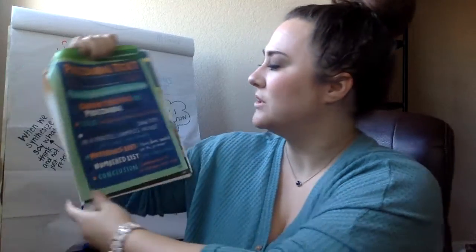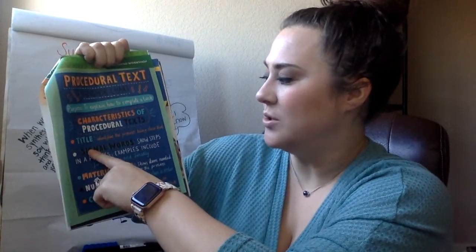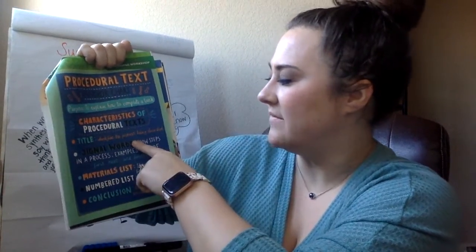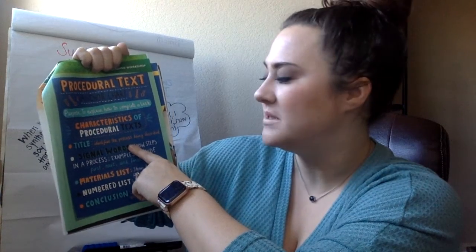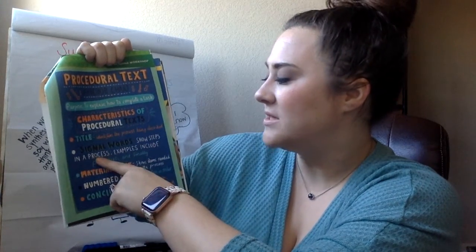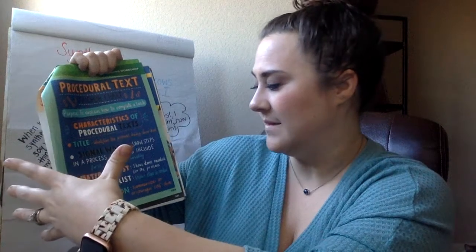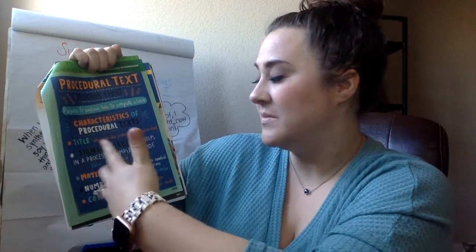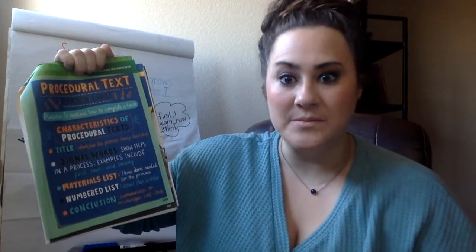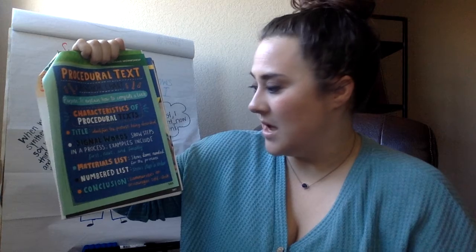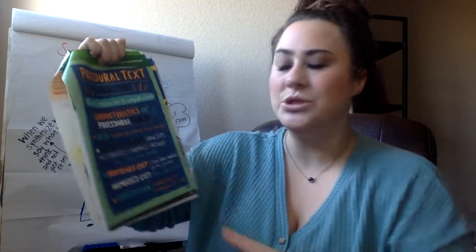Remember that the characteristics of a procedural text are: a title, which identifies the process being described; signal words such as first, next, finally; a material list, which shows the items that you need; a numbered list; and a conclusion.